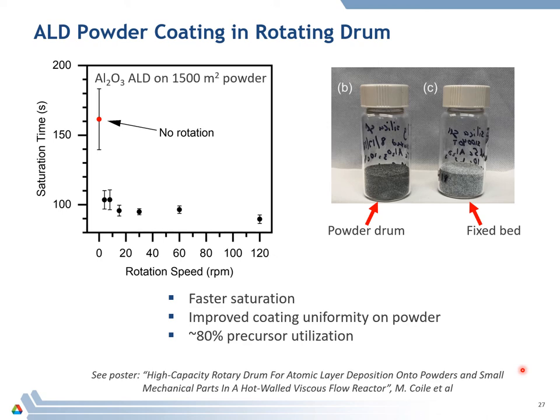One final note: even with the rotating powder drum, there's still the possibility of non-uniformity in the direction of flow. Even when you rotate the powder, the precursor will first encounter powder upstream and then flow downstream, becoming depleted. So downstream you'll always have smaller precursor exposures.